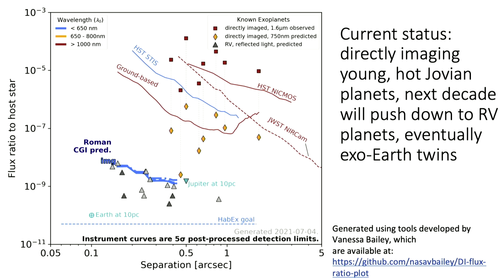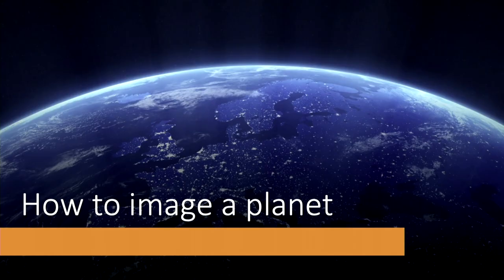The planets we're imaging to date are essentially young, hot, Jovian planets — that's what we have the contrast to do now. But the story of this field over the next couple of decades is going to be about pushing down to higher and higher contrasts. Here's where we are now, imaging planets in their thermal emission. In the next decade, we'll get down into here and eventually down to habitable zone exoplanets — first imaging some RV planets.